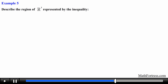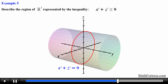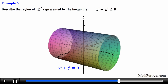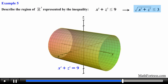Describe the region of R cubed represented by the inequality x squared plus z squared is less than or equal to 9. Let's graph this as an equation first — it represents a cylinder with circular traces of radius 3 located in the xz plane, centered on the y axis. Applying the inequality, we want the set of all points where x squared plus z squared is less than or equal to 9, which means all points whose distance from the y axis is at most 3 — these points are located inside the cylinder, including those on its surface.